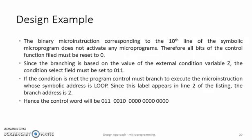The following binary microinstruction will be obtained. Condition select bits will be 011, branch address will be 0010. Since there is no branching or it is just the halt of the program, all control signals are reset to 0.